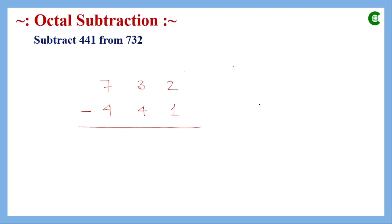Next we proceed with octal subtraction. First we subtract one from two — the result is one. Moving to the next position, we subtract four from three, but since three is less than four we cannot subtract directly; we need to borrow from the next significant bit.